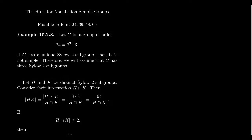Welcome back, everyone. Our hunt for non-abelian simple groups is almost at a close. We know that A5 is a non-abelian simple group of order 60, and we claim that that's in fact the smallest order for which you can have a non-abelian simple group. We know that 60 is going to work. There are three other contenders, though, that we have to throw out.